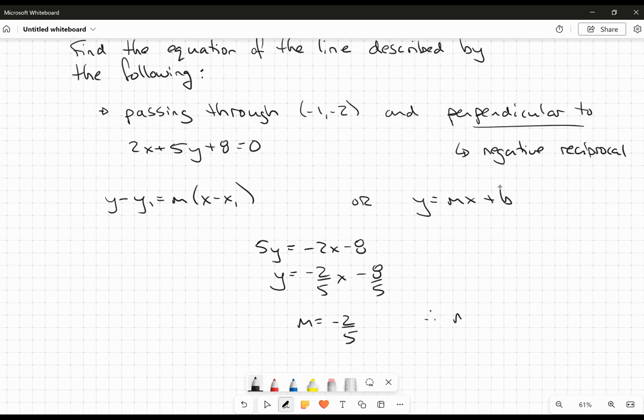So therefore, the slope of the line that's perpendicular to it will be the negative reciprocal. So we're going to change the sign to a positive and we're going to reciprocate the fraction. So the slope that we're actually looking for is 5/2.